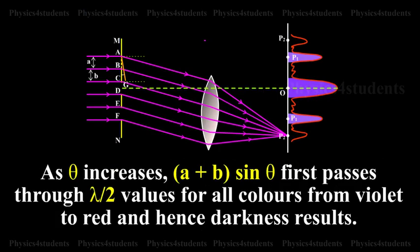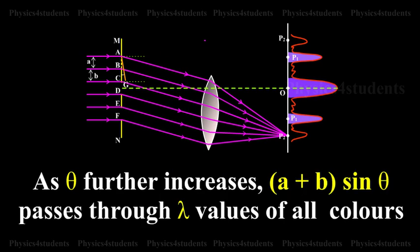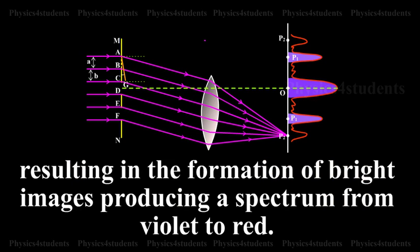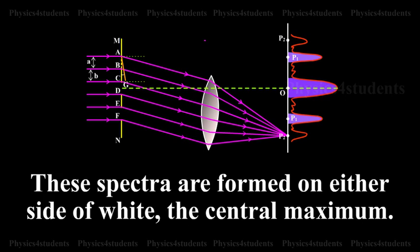As theta increases, A plus B into sin theta first passes through lambda by two values for all colors from violet to red and hence darkness results. As theta further increases, A plus B into sin theta passes through lambda values of all colors resulting in the formation of bright images producing a spectrum from violet to red. These spectra are formed on either side of the white central maximum.